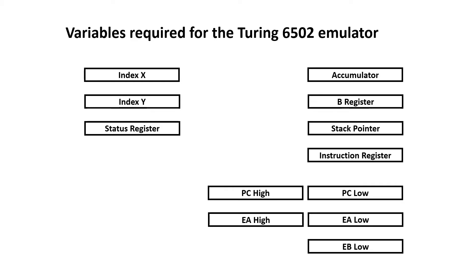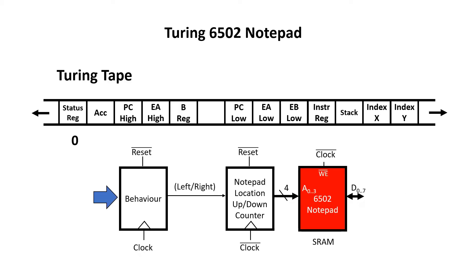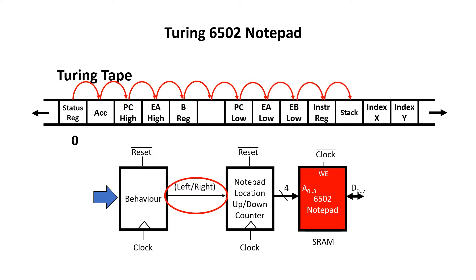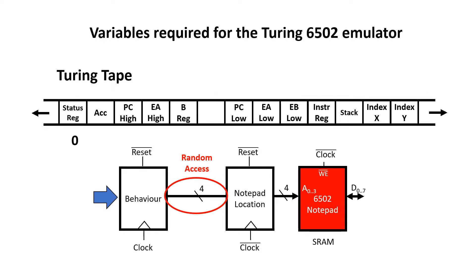On top of this, I had to model some effective address registers. This is how I laid out the variables on the Turing tape, and it's kind of arbitrary. But under the strictest definition of a Turing machine, I'm only allowed to move left or right once per clock cycle, so it would take 12 cycles to step from the status register to the index Y register. I didn't want to pay this penalty, so I allowed random access into the 6502 variable notepad. Now I can step from the status register to the index Y register in one clock.